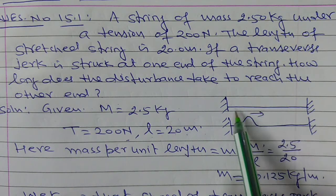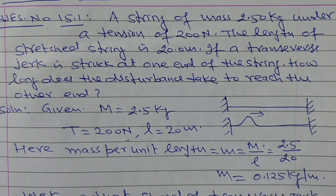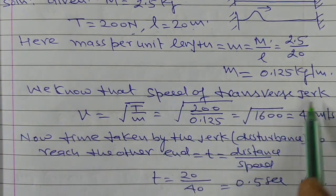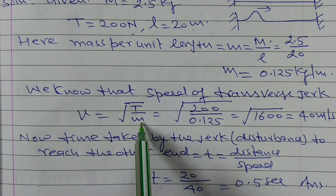This string is unit length of the string. Now, we know that the speed of the transverse jerk, V is equal to square root of T upon m.